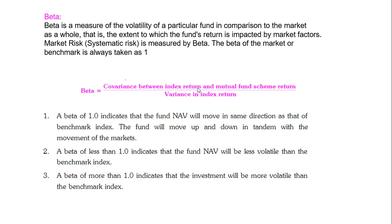If beta is 1, that means the index is Nifty and your stock is LNT — both are giving the same returns. If Nifty is going up by 8%, LNT will also go up by 8%. Same return, same direction — it will move together with the market, in equal proportion, because beta is 1.